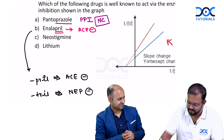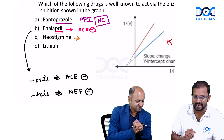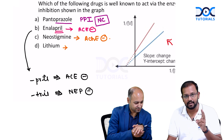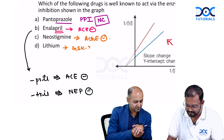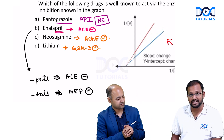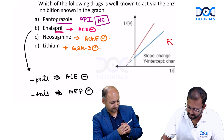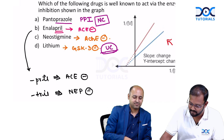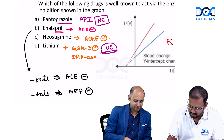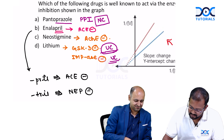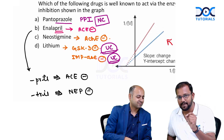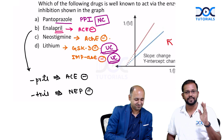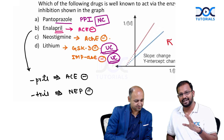Neostigmine is an acetylcholinesterase inhibitor. Lithium, on the other hand, is a dual inhibitor — it inhibits two enzymes. It inhibits GSK3 (glycogen synthase kinase 3) in an uncompetitive manner, and also inhibits IMPA (inositol monophosphatase) also in an uncompetitive manner. As explained earlier, uncompetitive inhibitors wait for the enzyme-substrate complex to form. Lithium is the classical example of an uncompetitive inhibitor currently in clinical use.